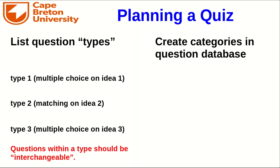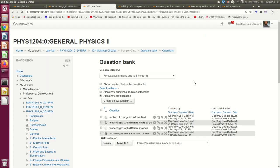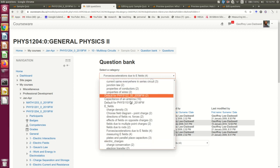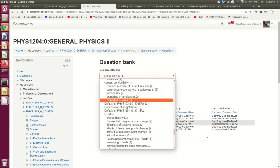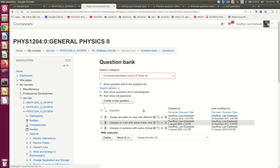They can be different versions of the same question, but they should be testing the same thing with roughly the same type of question. Within Moodle, you can create categories and populate those categories with the questions of each type. The quiz can then randomly draw questions from each category so that each student gets a question from each category, but they get different mixes. For example, here's the question bank in one of my courses — you can see broad topics, each divided into subcategories, with a number of fairly similar questions within each subcategory.